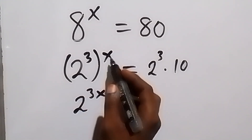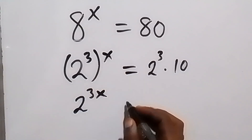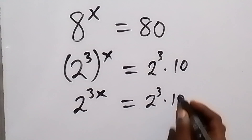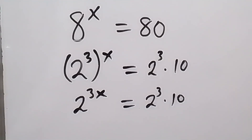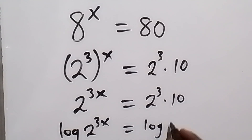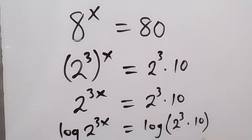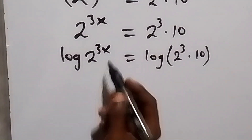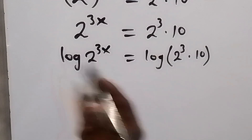From the law of indices, 2 to the power 3 raised to the power x becomes 2 raised to the power 3x. Now we take the log on both sides: log of 2 raised to the power 3x equals log of 2 raised to the power 3 multiplied by 10.